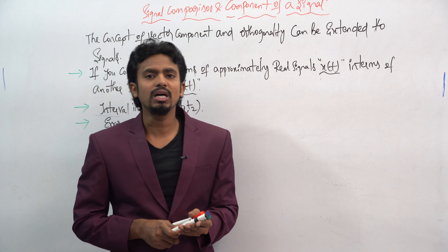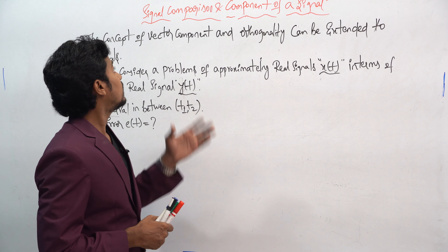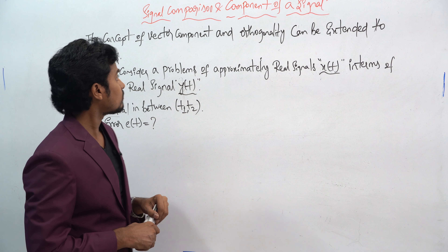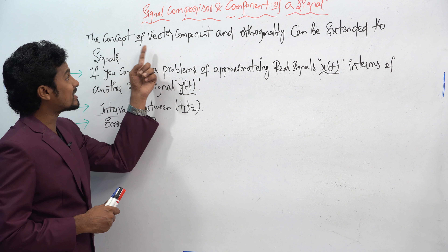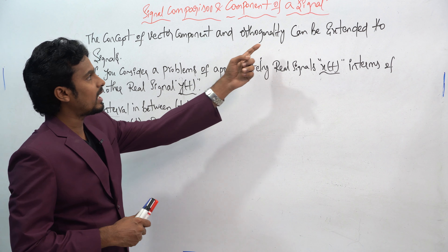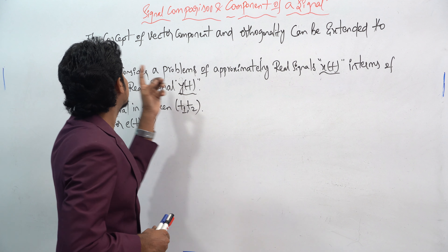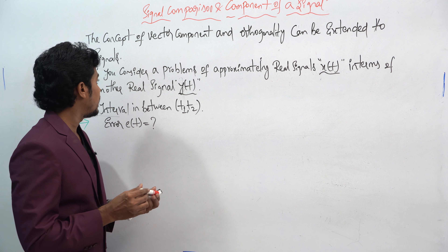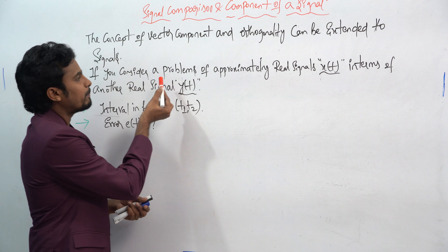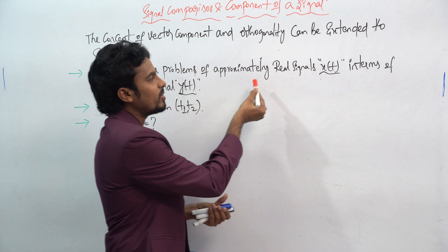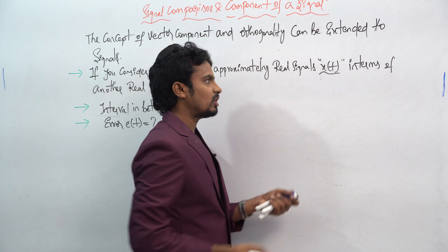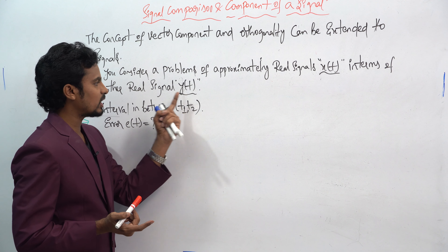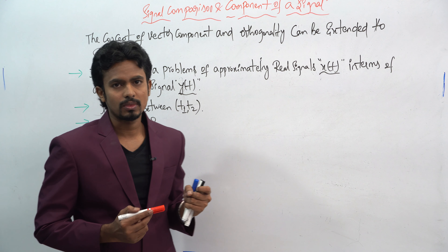Now let us move on to the next concept: signal comparison and component of a signal. Here you can see the concept of vector component and orthogonality can be extended to signals, as we already studied in the previous class. We consider the problem of approximating a real signal x(t) in terms of another real signal y(t).